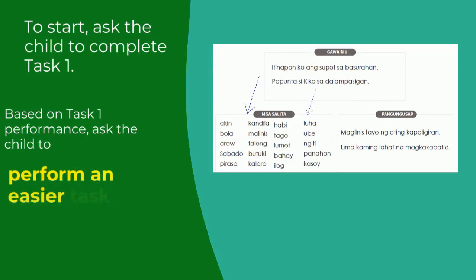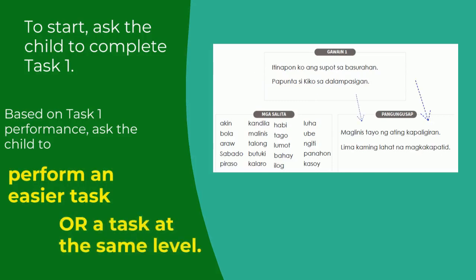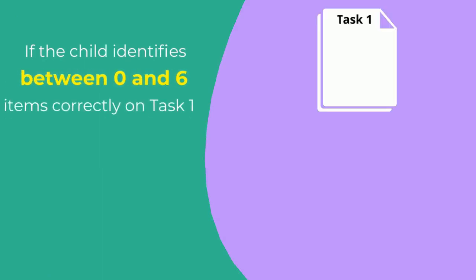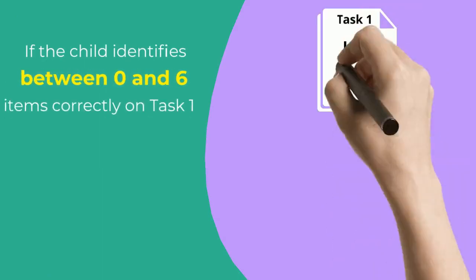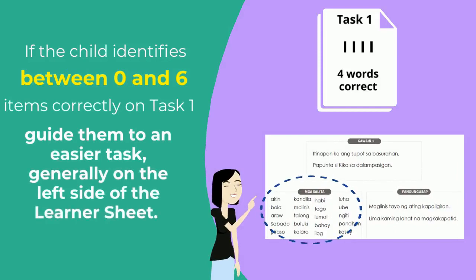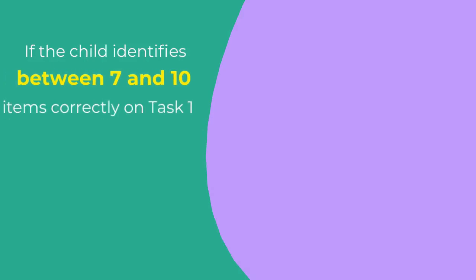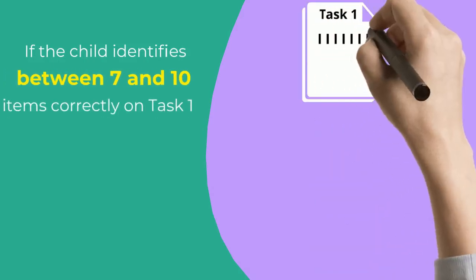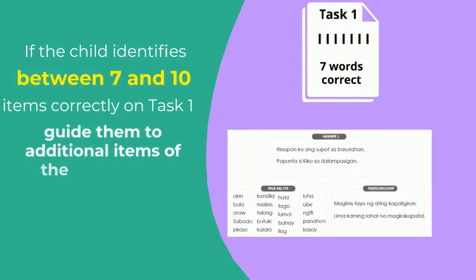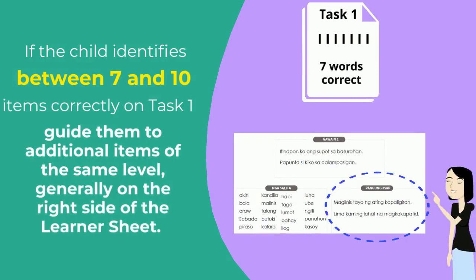Ask the child to perform an easier task or another task at the same level. Remember, each learner completes only two tasks per language. If the child answers 0 to 6 items correctly, guide them towards the easier task found on the left side of the learner sheet. If the child answers 7 to 10 items correctly, guide them towards additional items of the same level found on the right side of the learner sheet.